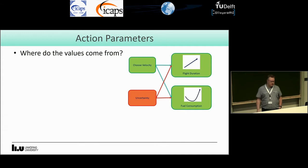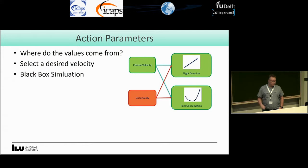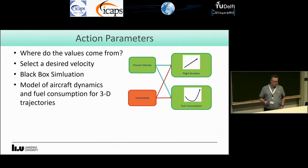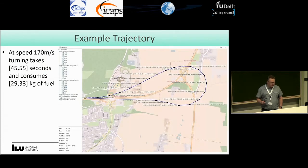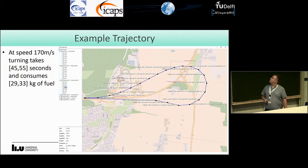For action parameters like velocity — where do these values come from? We select a velocity and put it into a black box, which contains a model of aircraft dynamics and fuel consumption and calculates results for 3D trajectories. It spits back the values, and we derive the uncontrollable bounds by factoring in weather and wind conditions. As an example trajectory: if you want to go at 170 meters per second with a fixed wing aircraft and fly out and come back facing the other direction, it might look something like this.